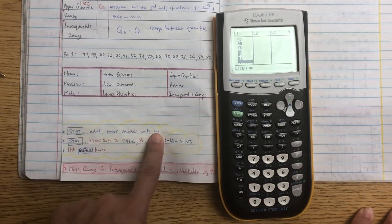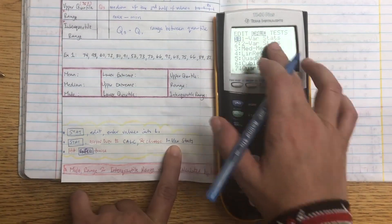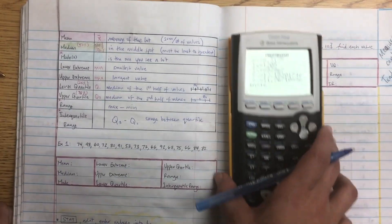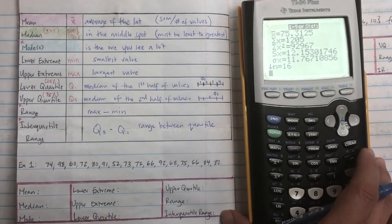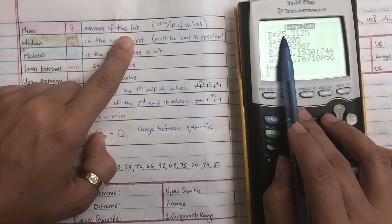All right, this is a listening check, color in example one. All right, then you're going to go stat, then arrow over to calculate like we've done before. And this time you're going to choose first variable stats and press enter. And it's going to give you all the information that you need. You just need to recognize what the symbols are.